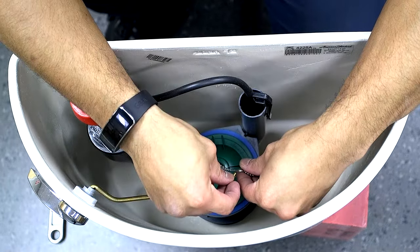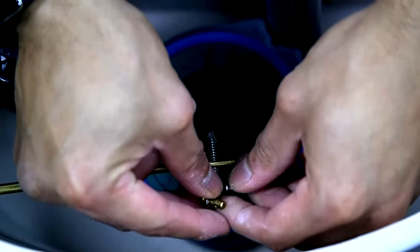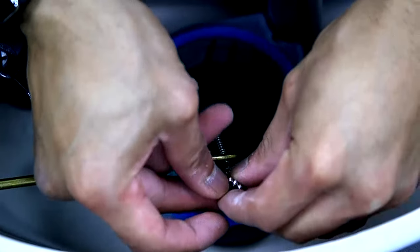Next, grab the chain, attach the clevis pin through the hole of the bead chain and the hole at the end of the trip lever.